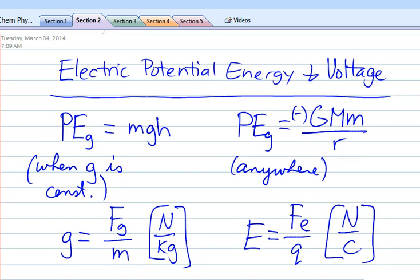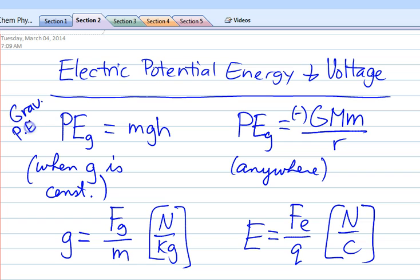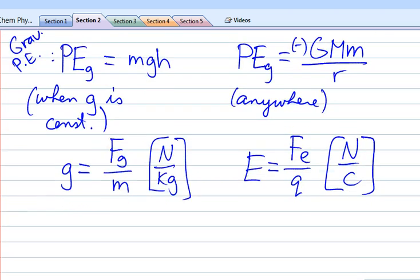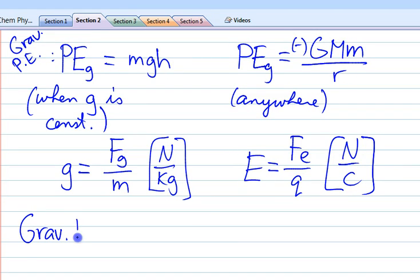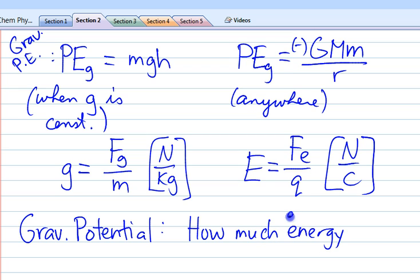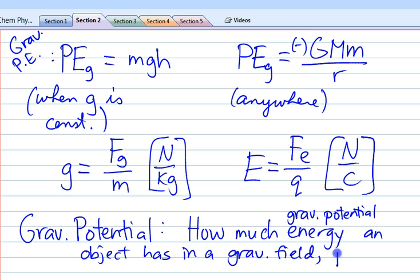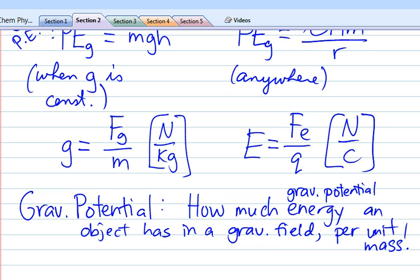So first of all, these guys are gravitational potential energy. That's what these two equations are: MGH and negative GMM over R. Well, there is a weird thing called the gravitational potential. Not the potential energy, just the potential, which is a really weird name.